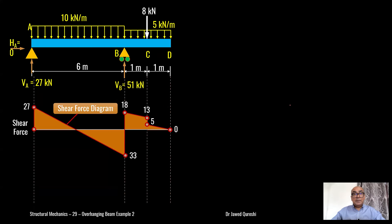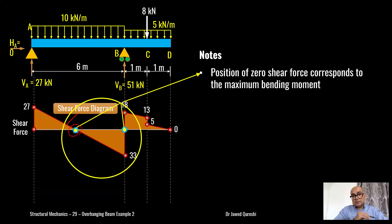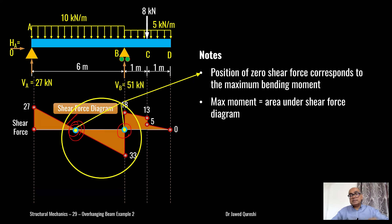My next job is to work out bending moments and plot them. Step 3 is the bending moment diagram. Remember that wherever you have shear force equal to zero, the bending moment is going to be maximum at that point. Here the bending moment will be maximum — that is the sagging bending moment — and at this other point we have a hogging bending moment.